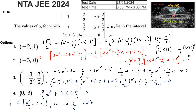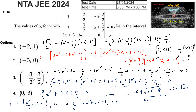Multiplying through by 6: 2α² + 6α + 1 = 0. Applying the quadratic formula with a=2, b=6, c=1: α = (−6 ± √(36−8)) / 4 = (−6 ± √28) / 4 = (−6 ± 2√7) / 4, which simplifies to (−3 ± √7) / 2.